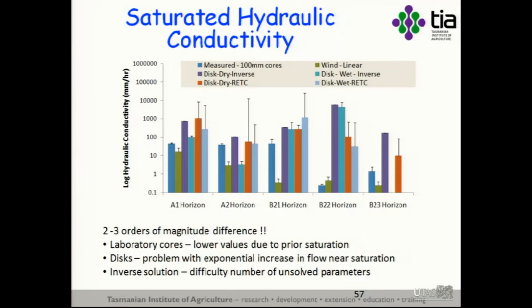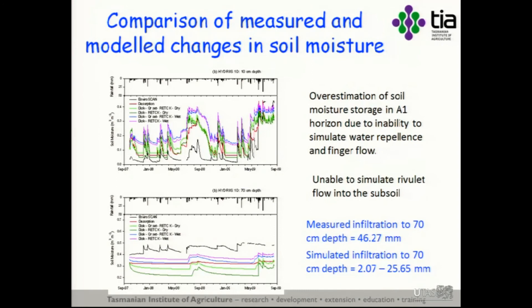Likewise, saturated hydraulic conductivity measured six ways resulted in up to four orders of magnitude difference — because some methods eliminate or minimise preferential flow while others can seek out that effect. When we run the data through Hydrus — the world's most sophisticated soil water hydrological model — using five different parameterisation approaches, it massively over-predicted moisture content in the A horizon and massively under-predicted infiltration into the subsoil. We have complete model failure.